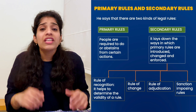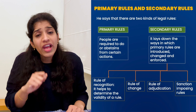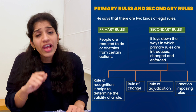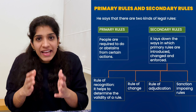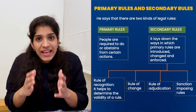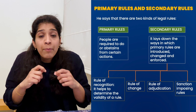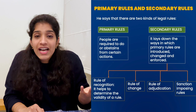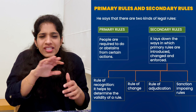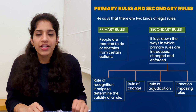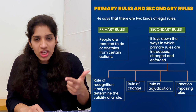अगर सिर्फ primary rules हों तो: existing rules में change किस तरीके से आएगा? Existing rule की validity कैसे check करेंगे? कोई rule को violate करता है तो उसे किस तरीके से decide करेंगे? इसीलिए वो second category बताते हैं — secondary rules। Secondary rules power conferring rules होते हैं, जिनके ज़रिए primary rules को check किया जाता है कि valid हैं या नहीं, existing rules को change किया जाता है, और उन्हें enforce किया जाता है। Hart ने कहा ऐसे चार secondary rules exist करते हैं।